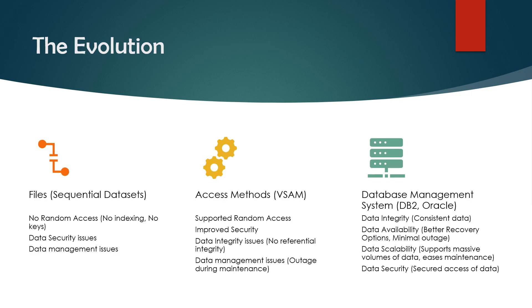In this slide we'll understand the evolution — how DB2 comes into the picture. First is the file. File is a sequential database. There were some issues with files: no random access, data security access, and data management access. After file, we have VSAM data. VSAM, the virtual storage access method, overcomes some file issues — it supports random access and improved security.